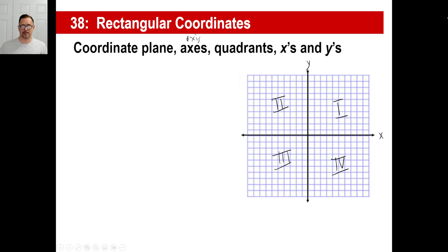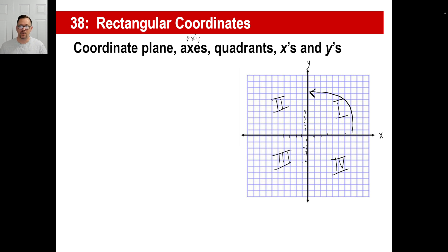Remember the number line we did many lessons ago? You go positive one, two, three, four, five and so on, and this is negative one, negative two, negative three, negative four. Well, the x-axis is a number line. The y-axis is also a number line — you just take the x-axis and turn it counterclockwise 90 degrees. We can find points on a coordinate plane and do lots of interesting things with them that are helpful in higher math.